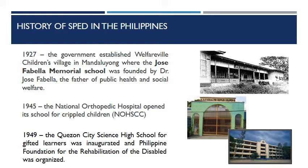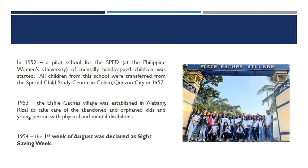In 1952, a pilot school for SPED at the Philippine Women's University for Mentally Handicapped Children was started, and all children from this school were transferred to the Special Child Study Center in Cubao, Quezon City in 1957. In 1953, the Elsie Gaches Village was established in Alabang, Rizal, to take care of abandoned and orphaned children and young persons with physical and mental disabilities. This American-owned village was later turned over to the government and accommodates about 470 people suffering from a range of mild to severe mental disorders.